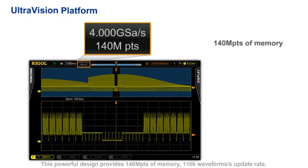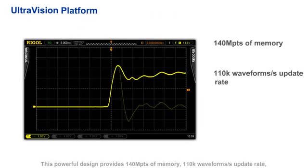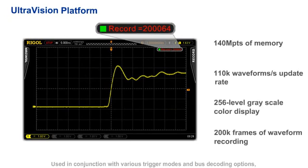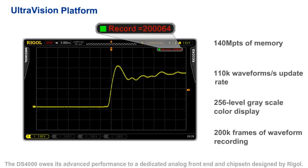This powerful design provides 140 million points of memory, 110,000 waveform per second update rate, 256 level grayscale color display, and 200,000 frames of waveform recording. Used in conjunction with various trigger modes and bus decoding options, the DS4000 can ease the most complicated test application.